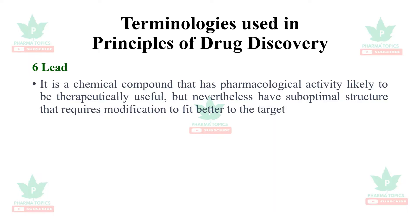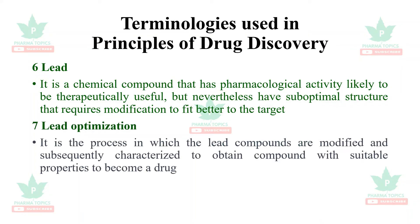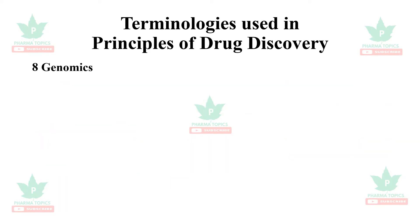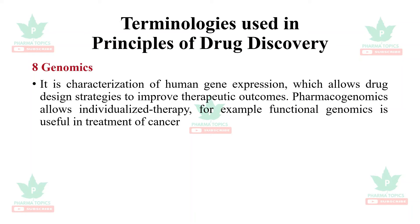Next is: lead. It is a chemical compound that has pharmacological activity, likely to be therapeutically useful, but nevertheless has a suboptimal structure that requires modification to fit better for the target. Lead optimization is the process by which the lead compounds are modified and subsequently characterized to obtain a compound with suitable properties to become a drug.